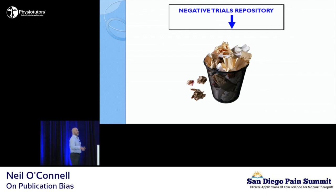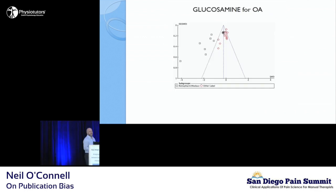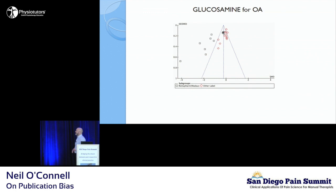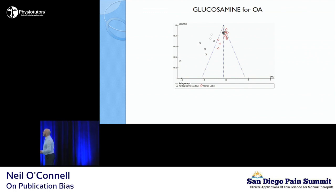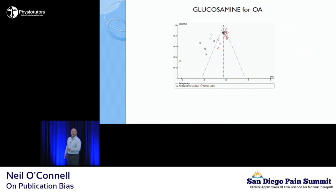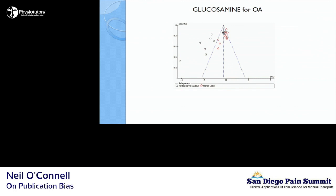Publication bias is a serious infrastructural problem. This is a great example of it. This is a funnel plot, which is another nerdy thing from systematic reviews. And this is glucosamine for osteoarthritis.